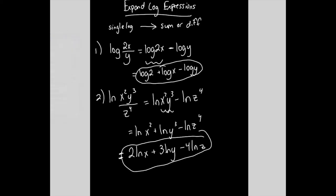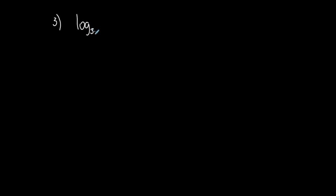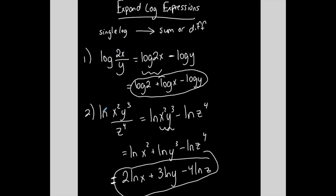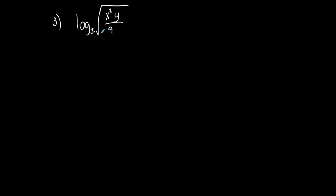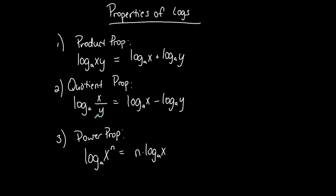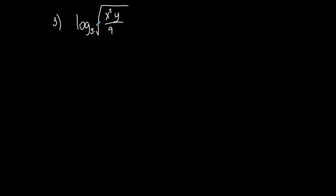These are typical examples. Let me add something that kind of throws people for a loop: log base 3 of the square root of x squared y over 9. There's not a whole lot of difference from before — I still have the quotient — but the key difference is there's a square root over that whole quotient. I can't go right into the quotient property because I have to get the quotient by itself first. So I have to get rid of the square root.